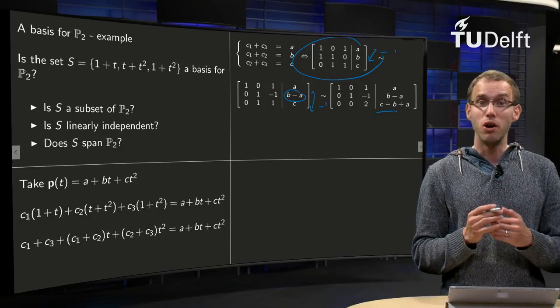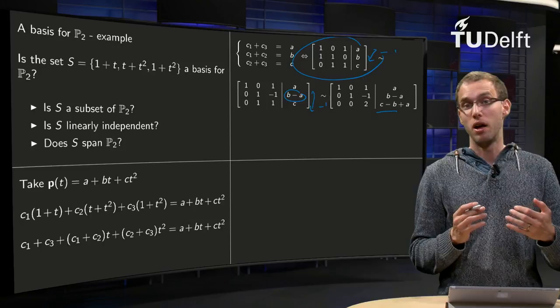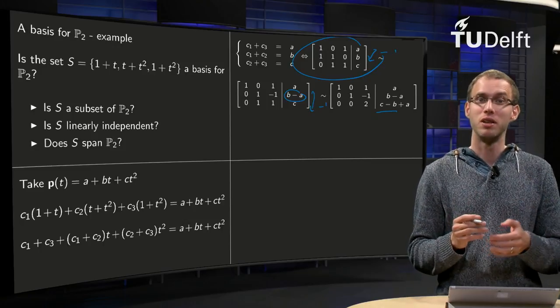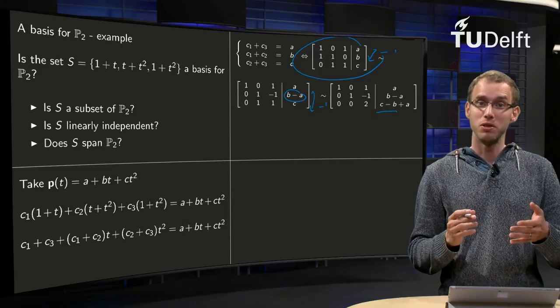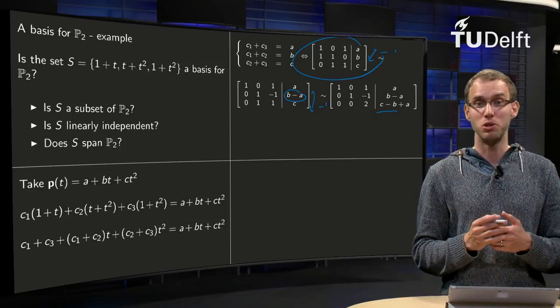But the only thing you need to know is whether you can solve this problem, not what exactly the solution is. You have to see whether the system is consistent or not. But now you can see it, because you see that every row has a pivot, so you can find a solution.